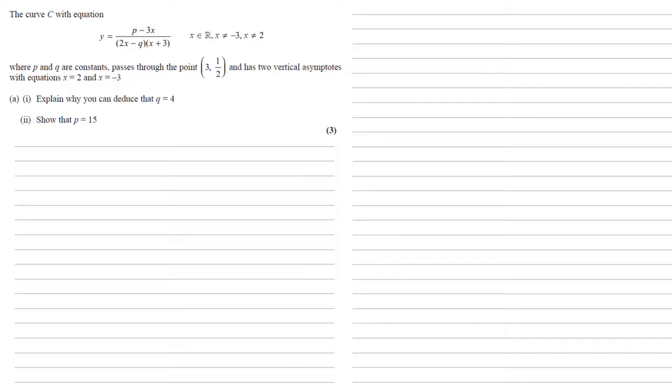The curve C with equation y equals p minus 3x over 2x minus q times x plus 3, where p and q are constants, passes through the point (3, 1/2) and has two vertical asymptotes with equations x equals 2 and x equals negative 3.